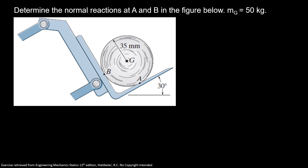So now the forces acting on our paper roll: here I have the weight, here I have my normal B, and here I have my normal at A.